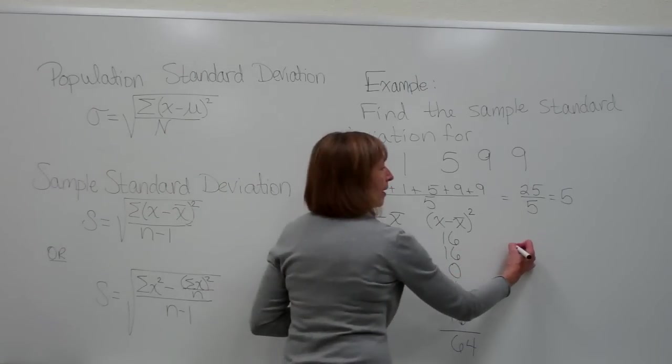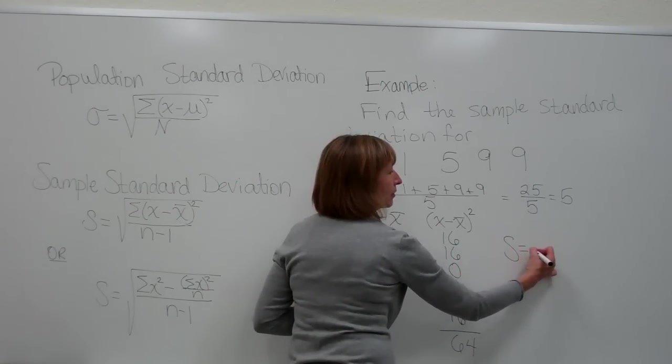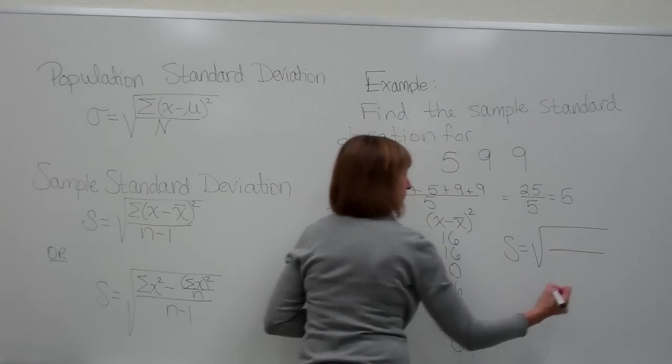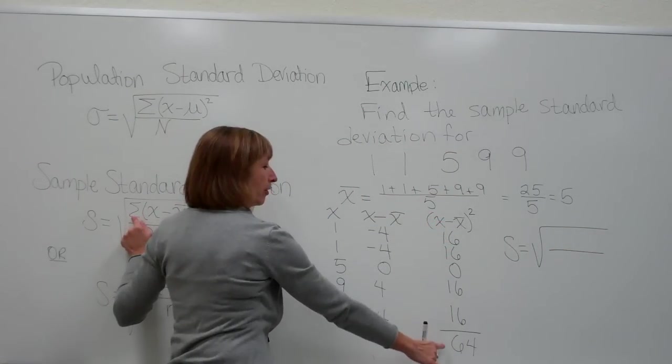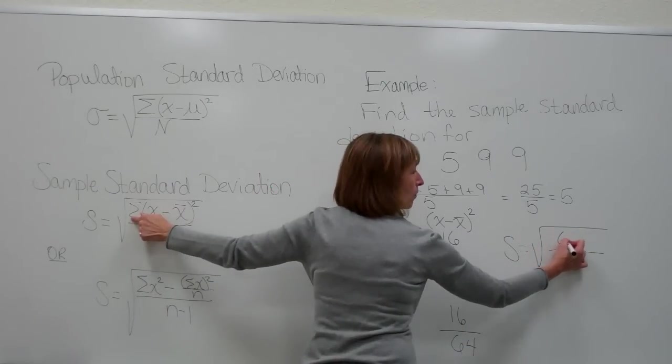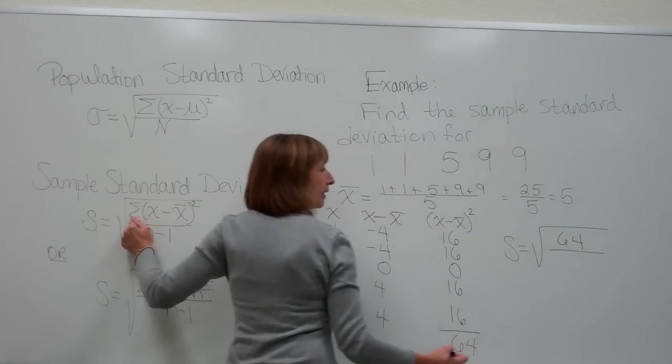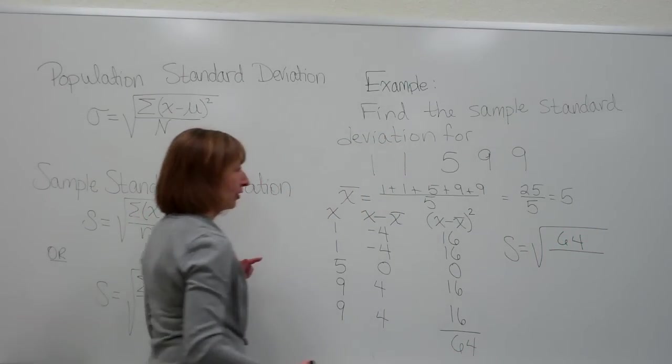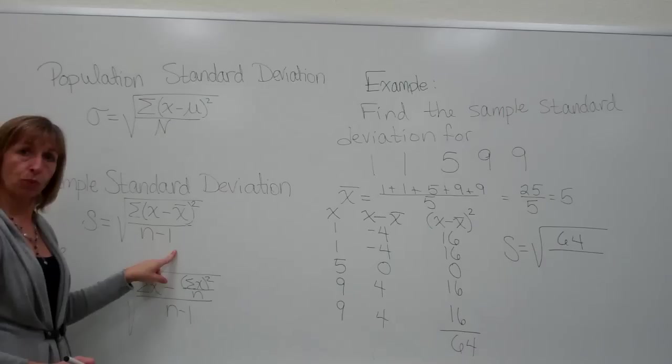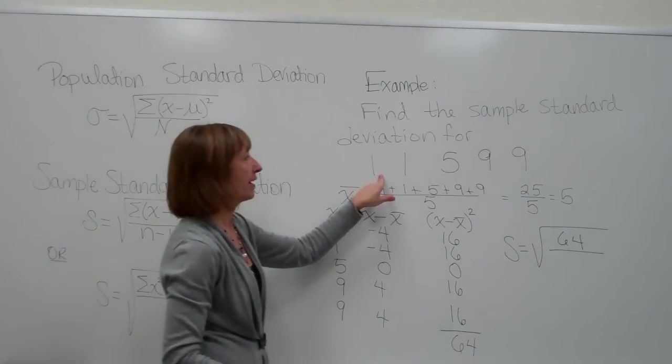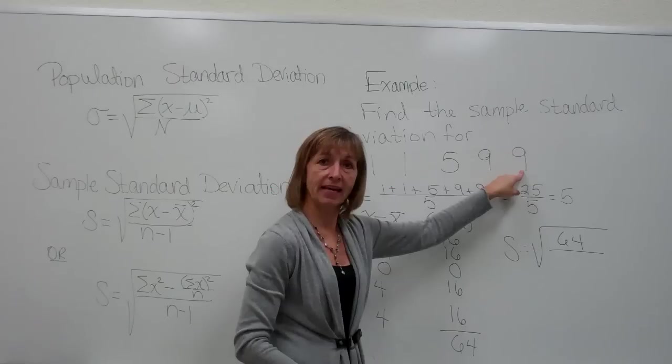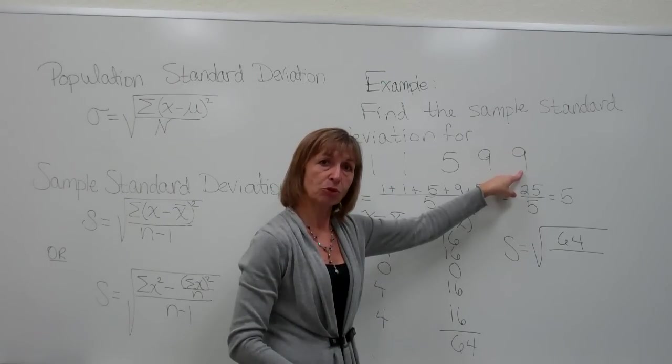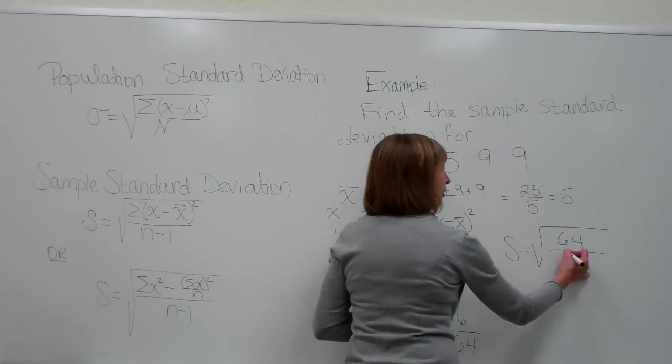So now my s is equal to the square root of, in my numerator I have this total 64. In the denominator, you take n minus 1. The number of my data values is, I have 5 data values, and 5 subtract 1 gives me a denominator of 4.